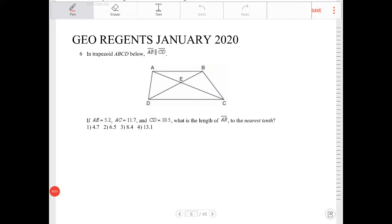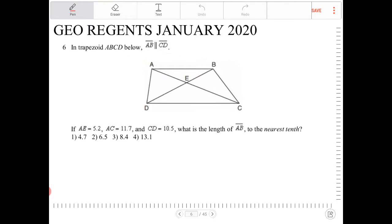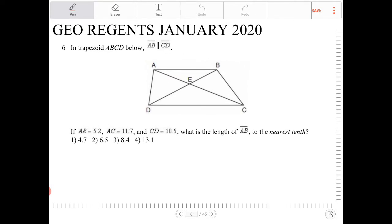In trapezoid ABCD below, AB is parallel to CD. If AE is equal to 5.2, and I'm going to label this, AE is 5.2.